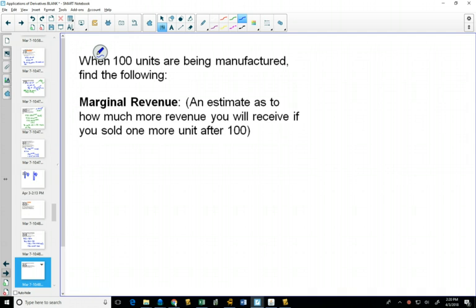Now, when we find the marginal revenue, which is the derivative, what's the derivative of 80x? 80. Now, that is an estimate. It's a pretty good estimate. It's exactly right on. But that derivative gives us an estimate of what's happening when you go from 100 to 101.